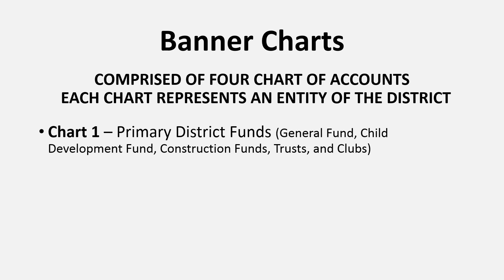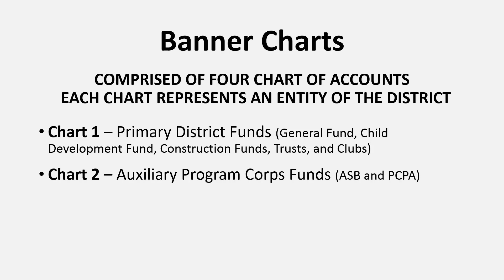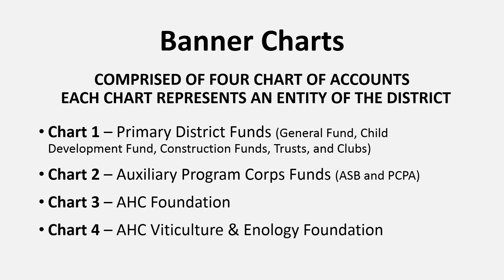In Chart 1 are the primary district funds — for example, general fund, child development fund, construction funds, trusts, and clubs. In Chart 2 are the auxiliary program corporation funds, or PCPA and ASB. Chart 3 is the AHC Foundation. And Chart 4 is the AHC Viticulture and Enology Foundation.